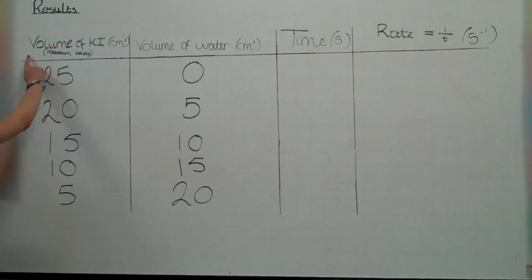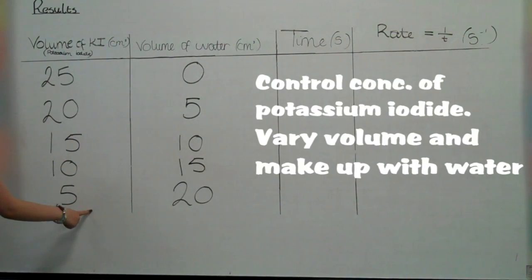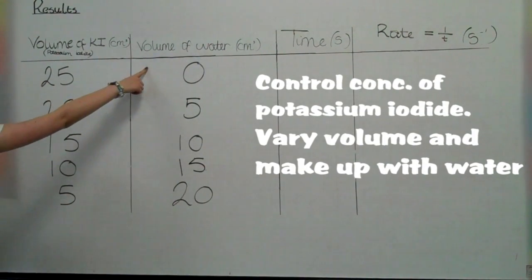We vary the concentration of potassium iodide. We do this by varying the volume of potassium iodide with water to make it up to 25 cm³.